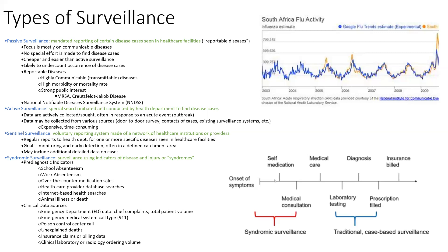Syndromic surveillance uses non-traditional indicators of disease — going a few days before a diagnosis is made. It looks at pre-diagnostic indicators like being out of school, posting on Twitter that you feel unwell, or internet health searches. For example, Googling the flu is concurrent with rises in flu cases. This lets you detect disease presence likely a few days before someone gets to a doctor for a diagnosis.